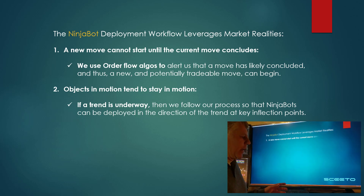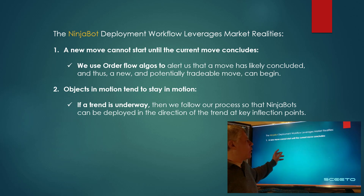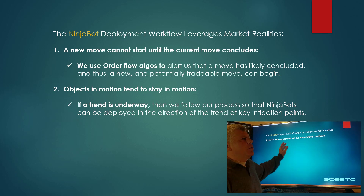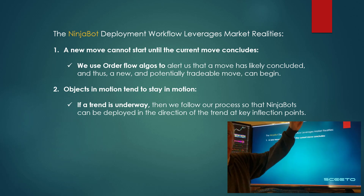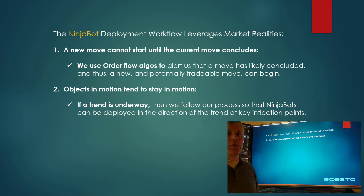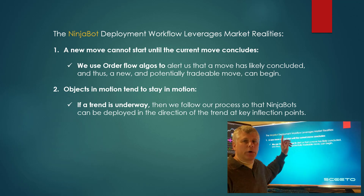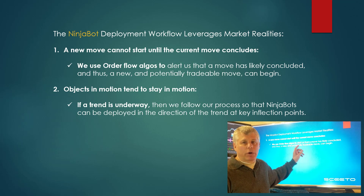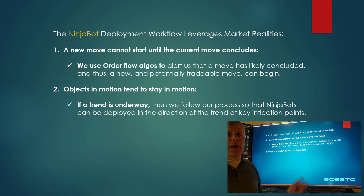The first thing we've built into the bots and into the workflow is the understanding that one move can't start until the other move ends. So a new uptrend can't start until a downtrend ends. Our workflow starts off with alerts that are predicated on what we call conclusionary order flow, and that's baked into the product and ships with the product.